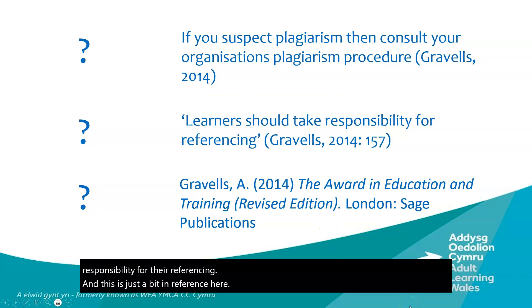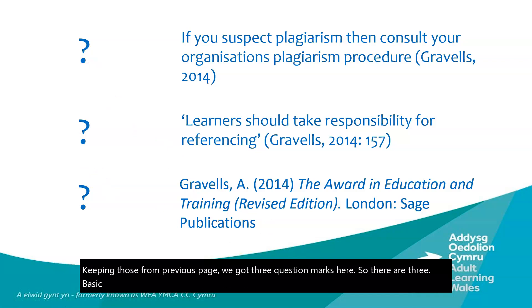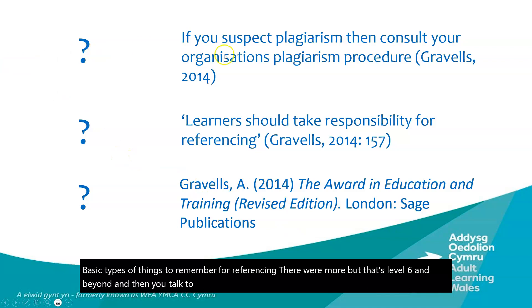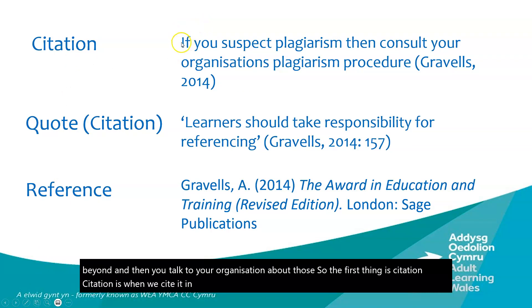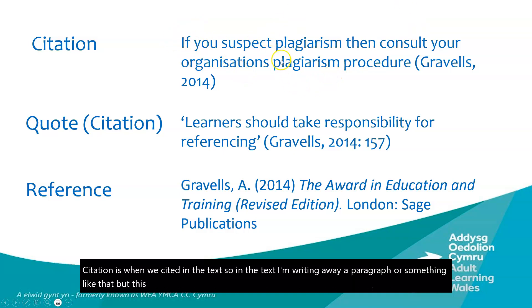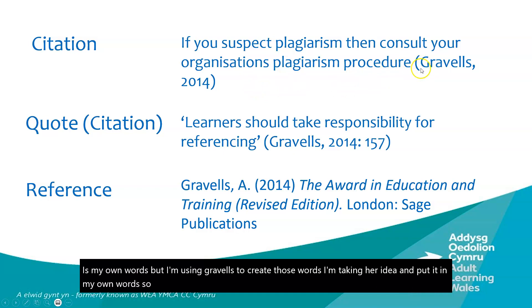There are three basic types of things to remember for referencing — there are more, but that's level six and beyond. The first is citation. Citation is when we cite in the text — I'm writing a paragraph and this particular content is in my own words, but I'm using Gravels to create those words. I'm taking her idea and putting it in my own words, so I'm paraphrasing her. I note the author and the date — that's called the citation.